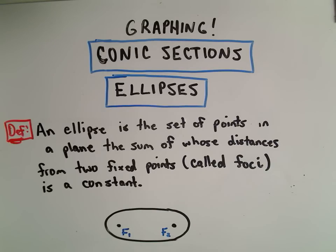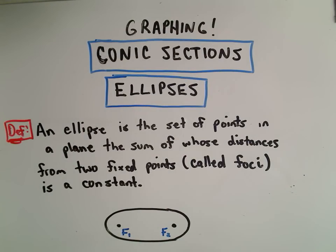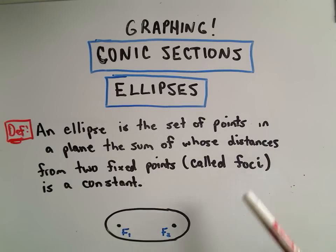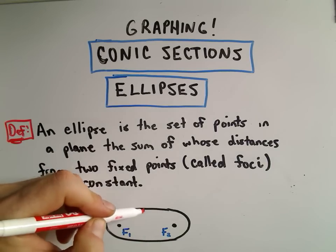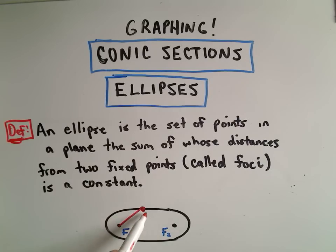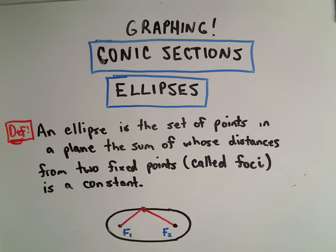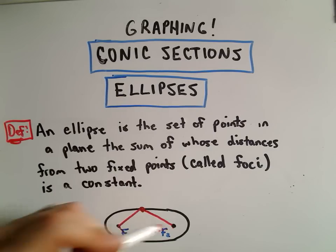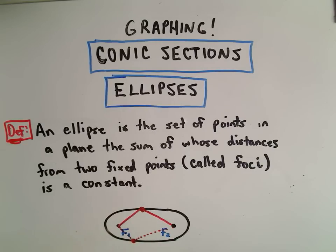In this video I'm going to talk about the conic sections and specifically ellipses. I'm going to take an equation and graph that particular ellipse. The definition of an ellipse is: a set of points in a plane the sum of whose distances from two fixed points called the foci is a constant. So we have two points in the plane, the foci labeled f1 and f2. If you take any point on the graph and add the distances from each foci to that point, you'll get some constant value — and that value is the same no matter which point you choose.